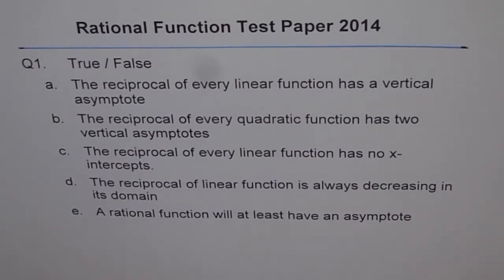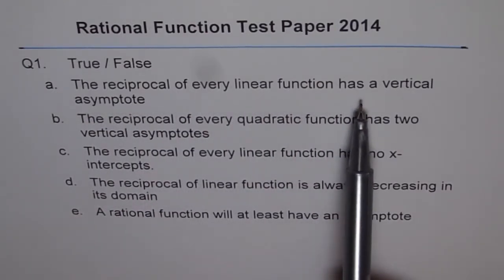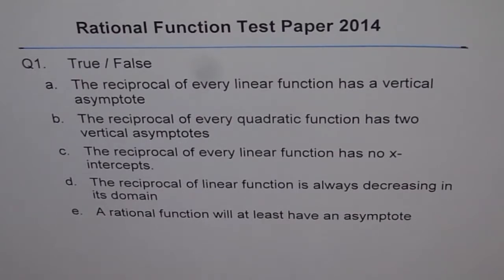Question 1. True or false? A. The reciprocal of every linear function has a vertical asymptote. I like you to answer these questions as soon as I start or stop reading the question.